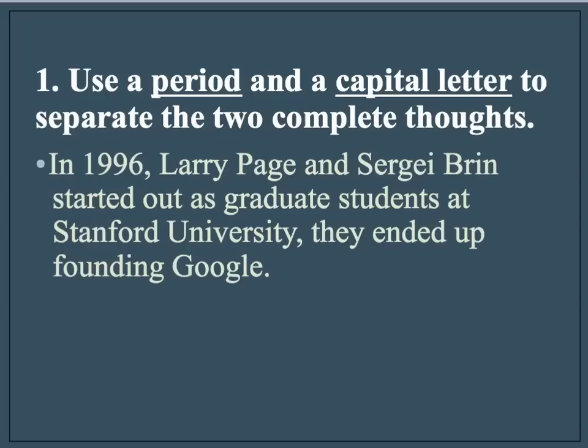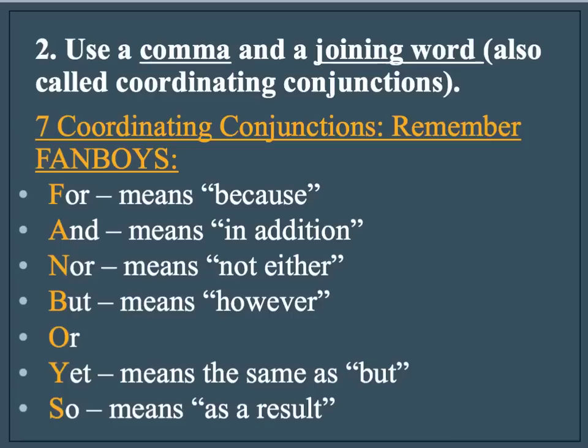First option is, of course, the easiest: use a period and a capital letter to separate the two complete thoughts. We're already working with two complete sentences anyway. So why don't we just change this little comma right here into a period, capitalize the first word of the second sentence, and now we have a corrected comma splice.